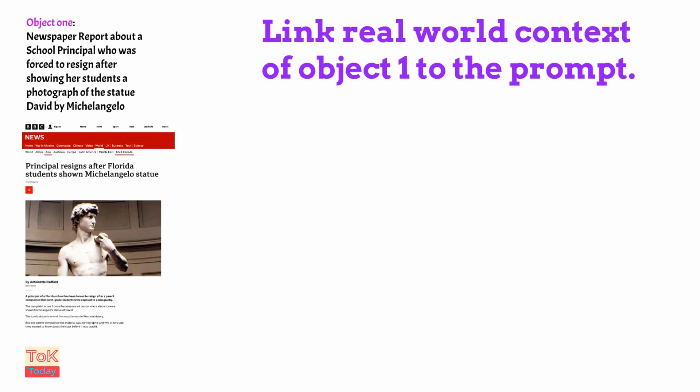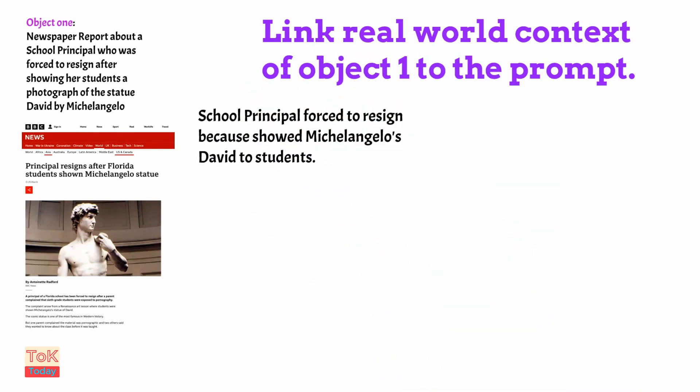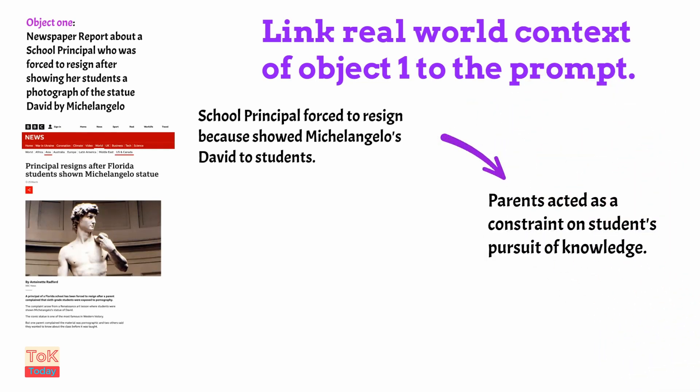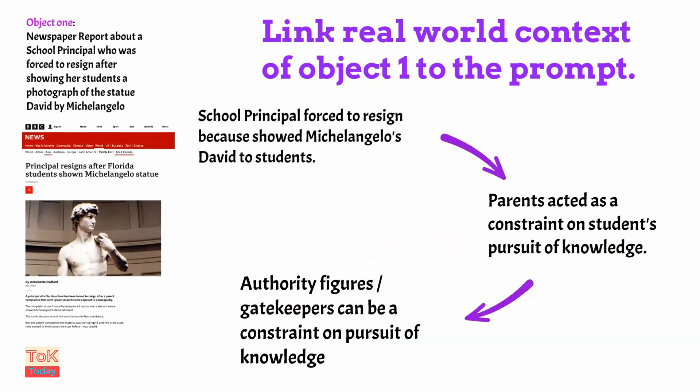Now I need to link the real-world context of that newspaper report to the prompt. My link here is that the school principal was forced to resign because she showed a picture of Michelangelo's David to students. The parents forcing her to resign were acting as a constraint on the students' pursuit of knowledge. The argument I'm making is that authority figures or gatekeepers can be a constraint on the pursuit of knowledge — 'gatekeepers' is a useful term in TOK that you could explore further for this prompt.